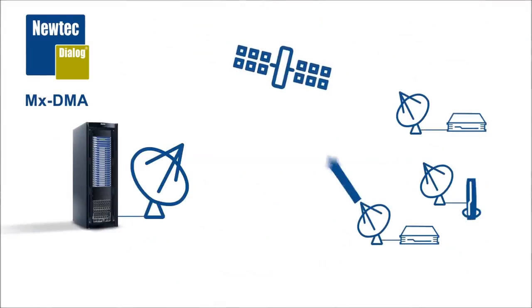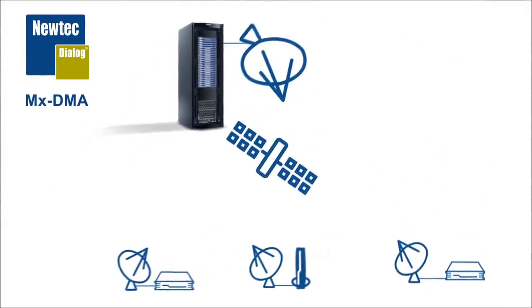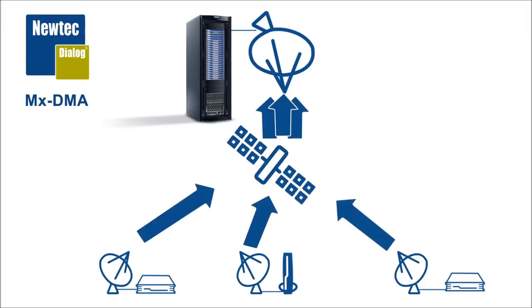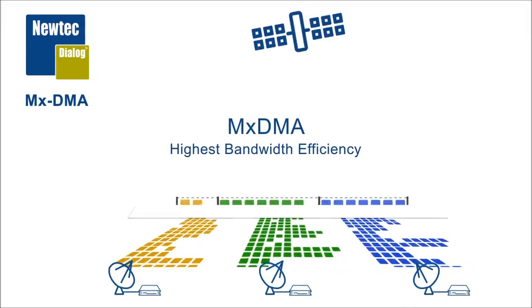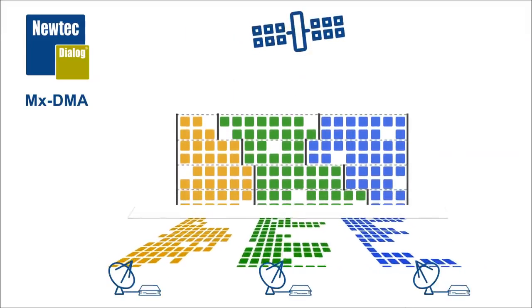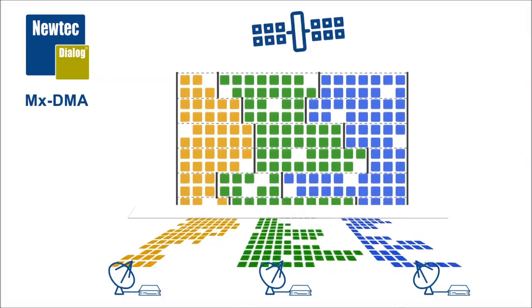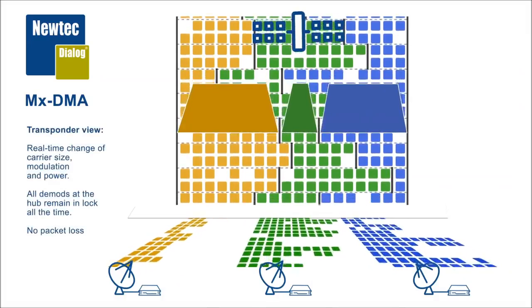So here comes MXDMA. And again with that same three-site example and the same traffic distribution, MXDMA combines the high efficiency of SCPC with the flexibility of MFTDMA. And how do we do that? Well actually the secret is in the patent whereby the frequency plan is changed dynamically every second.